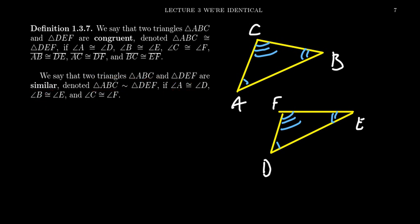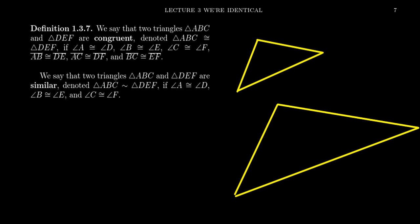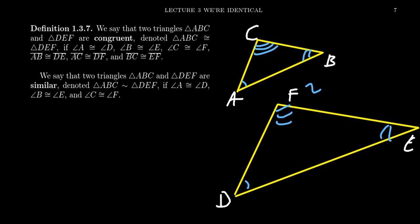If two triangles are congruent, they definitely are similar. But it's not necessarily the case that if two triangles are similar, they have to be congruent. For example, we could draw a picture like the following. So we have ABC and we have DEF. Angle A is still congruent to angle D, angle E is still congruent to B, and angle C is still congruent to F. So these triangles are similar to each other, but they're not congruent — you'll notice that the side lengths of the two triangles are different. The DEF triangle is much bigger than ABC.